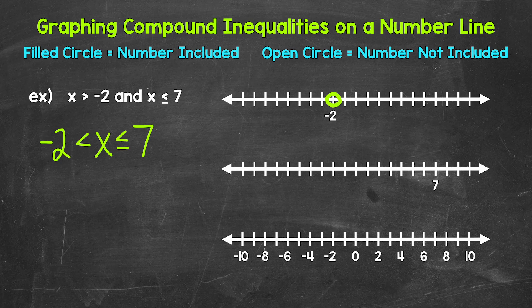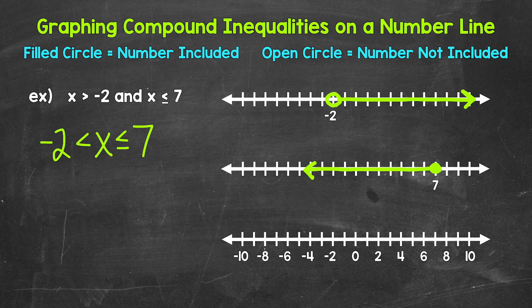Then we need an arrow going right, representing everything greater than negative 2. That's x is greater than negative 2 — anything greater than negative 2 is a solution. Next, we have x is less than or equal to 7. Now 7 is included, so we need a filled circle at 7 and then an arrow going left, representing everything less than or equal to 7.